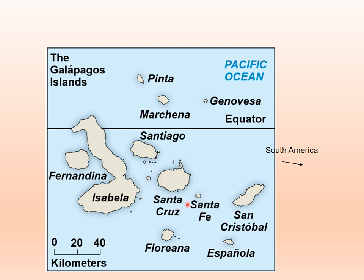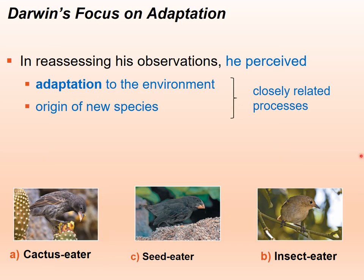Each of these islands has a different environment. Whenever there's a different environment, it causes adaptation and eventually speciation. Darwin studied many organisms but focused a lot of his writings on the finches of the Galapagos Islands. He perceived adaptation to the environment and the origin of new species as two closely related processes — adaptation typically occurs first, and then speciation often occurs after that.